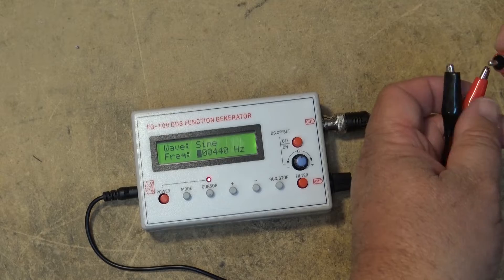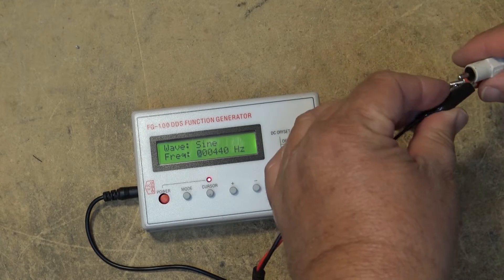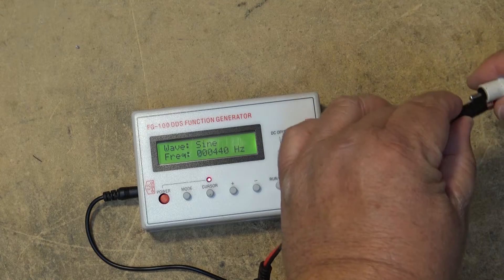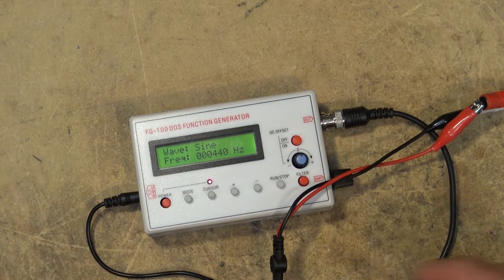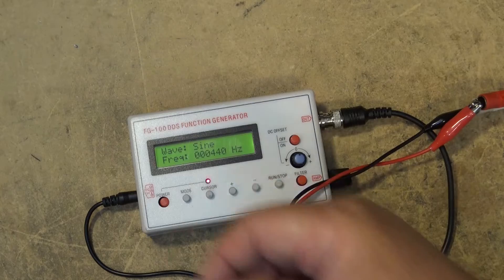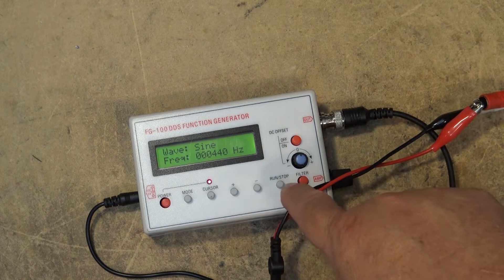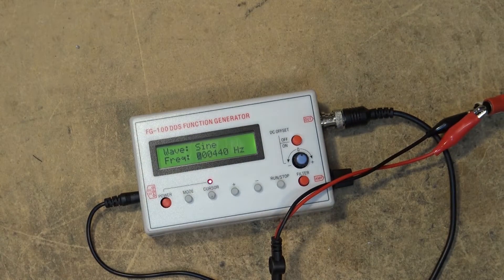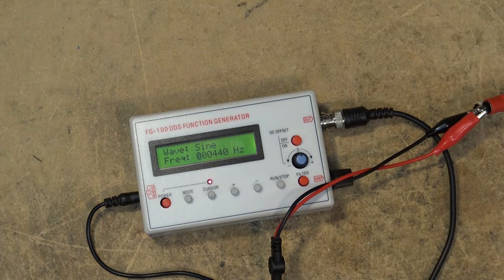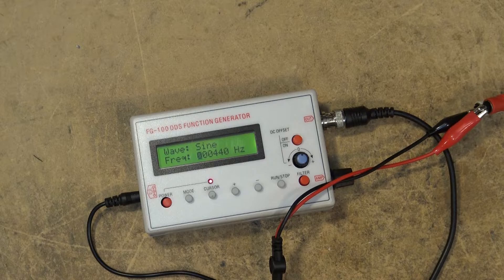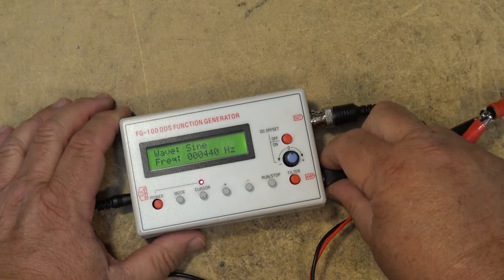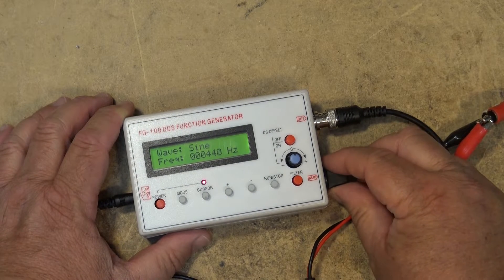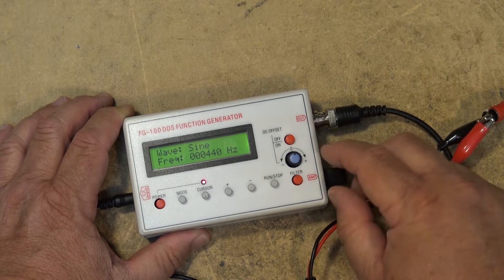Output is a standard BNC. So we'll turn that off so you don't have to listen to that. But here we go we'll turn it on. Here's a sine wave and we can control the output here. We've got an amplitude control. There's a filter as well. You can turn on and off.